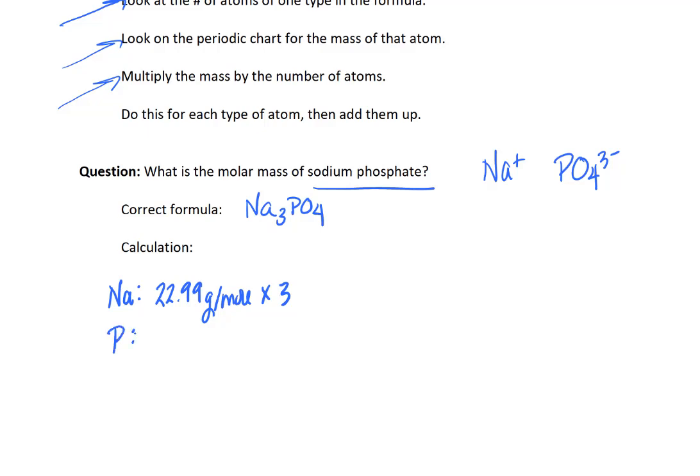My periodic table says phosphorus is 30.97. And we have one of them. Oxygen is 16.00. Your periodic table might say 15.99. Again, that's fine. And we have four of them. So you would go through and calculate that and then add all of them up and you should get something like 163.94.